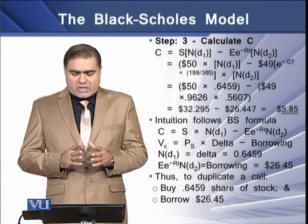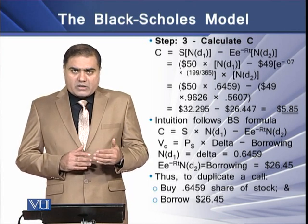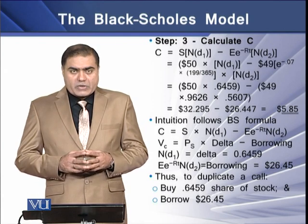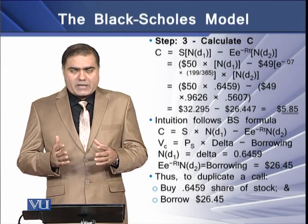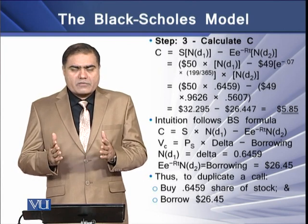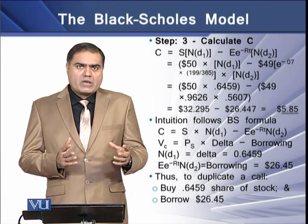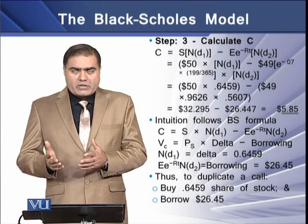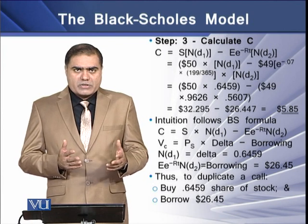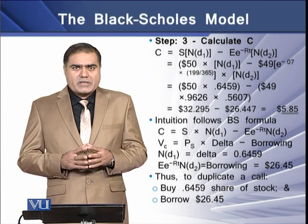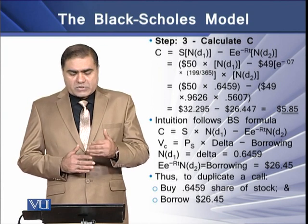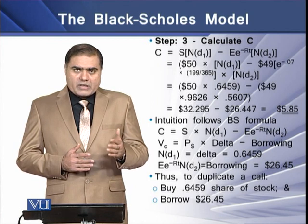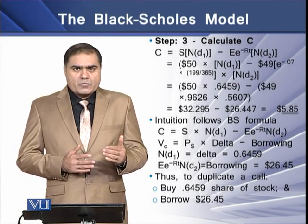The intuition from the BS formula is that the value of the call equals the stock price multiplied by delta, minus the amount borrowed. In this model, N(D1) equals delta, which is 0.645. This delta indicates that we need to buy approximately 65% of a share of the stock to duplicate the call, and then borrow an amount equal to $26.45. This is how we can duplicate the call.